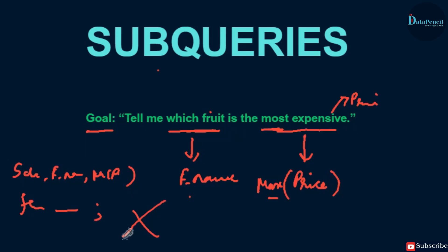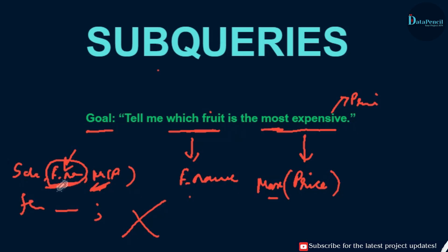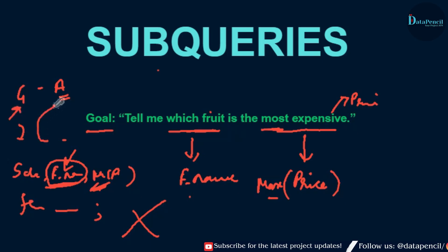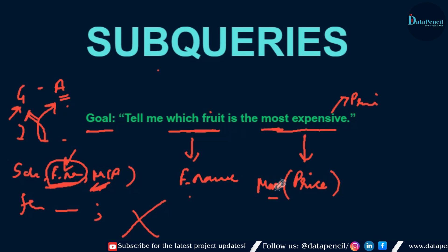We cannot leave any column like that. Remember the rule we studied: GROUP BY and aggregate functions are siblings. If we are using more than two columns, one should go with GROUP BY and another with aggregate functions, or all columns should be inside the GROUP BY clause. So how can we solve this?